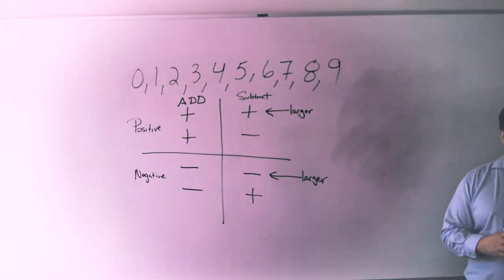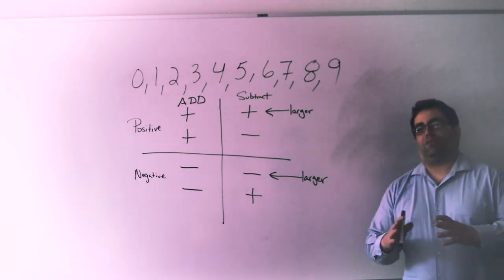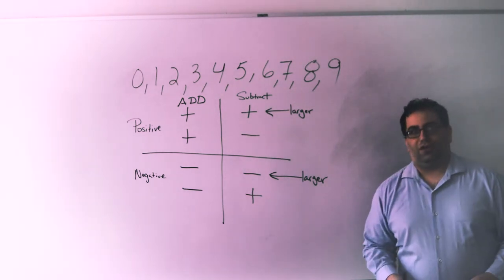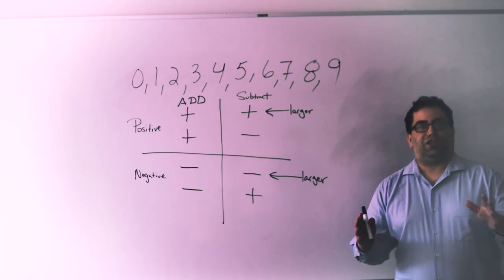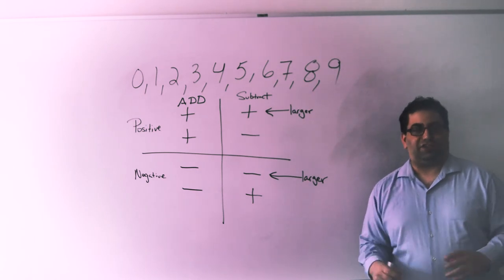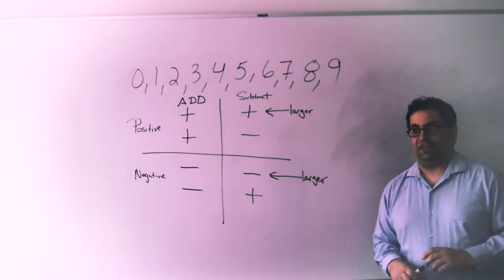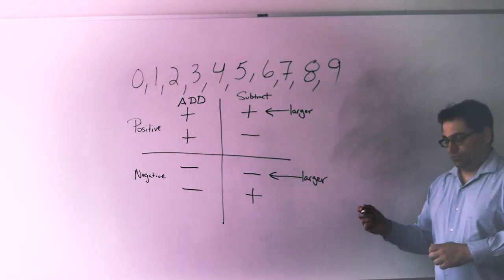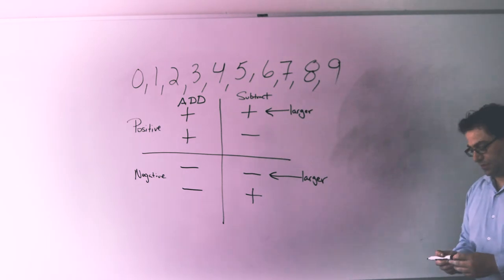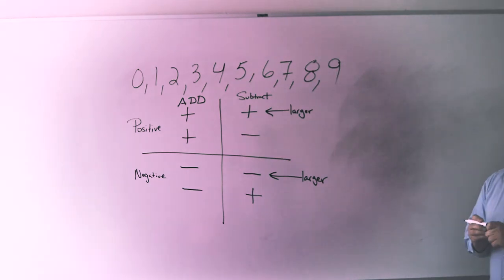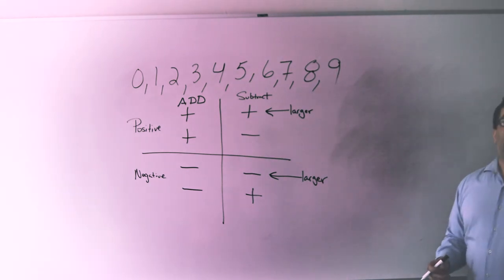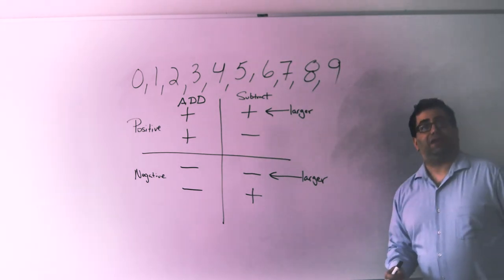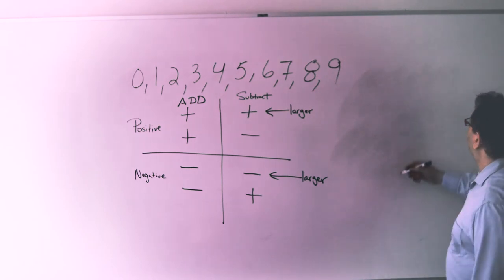You're probably saying to yourself, that's great Mr. Mullen — addition is easy. Let's try some subtraction. Let's try 96 minus 108.